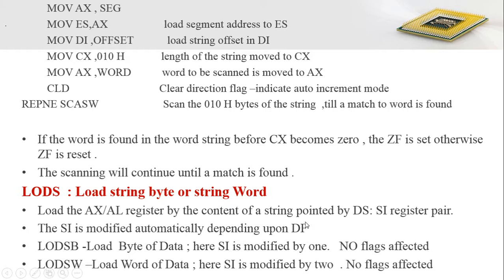In LODS, the AX or AL register is loaded by the string pointed by the DS:SI register pair. The source value at that location is loaded into AX or AL depending on the instruction. LODSB loads byte by byte from the pointed location into AL, and LODSW loads word by word into AX. The SI value is updated based on the direction flag: if DF equals 0, SI is incremented for auto-increment mode; if DF equals 1, SI is decremented after each transfer to point to the next location. No flags are affected.